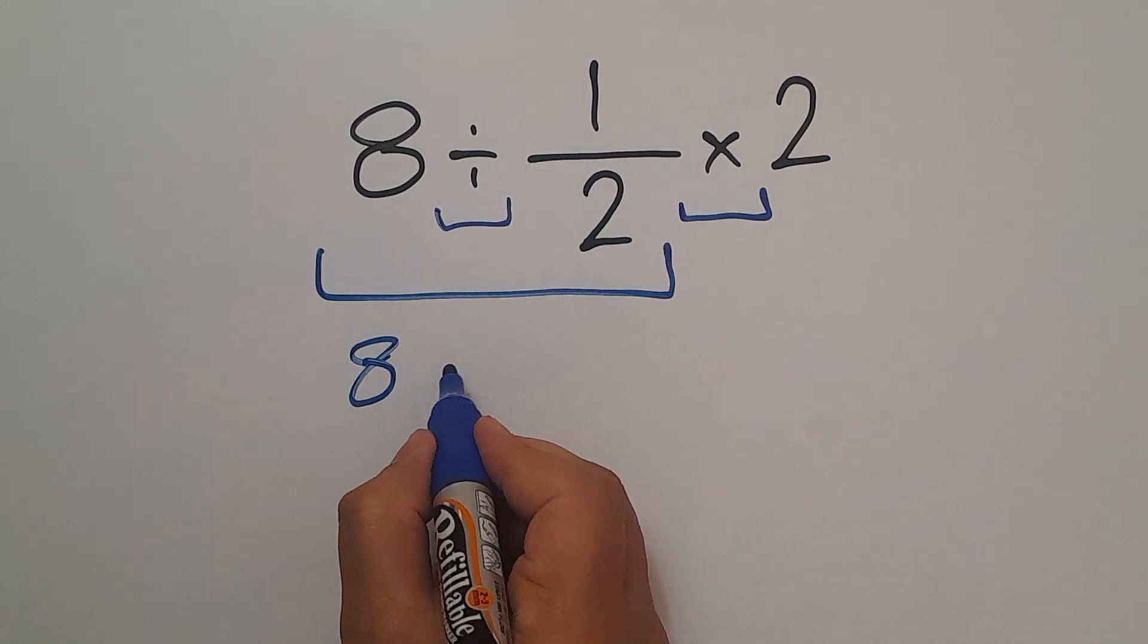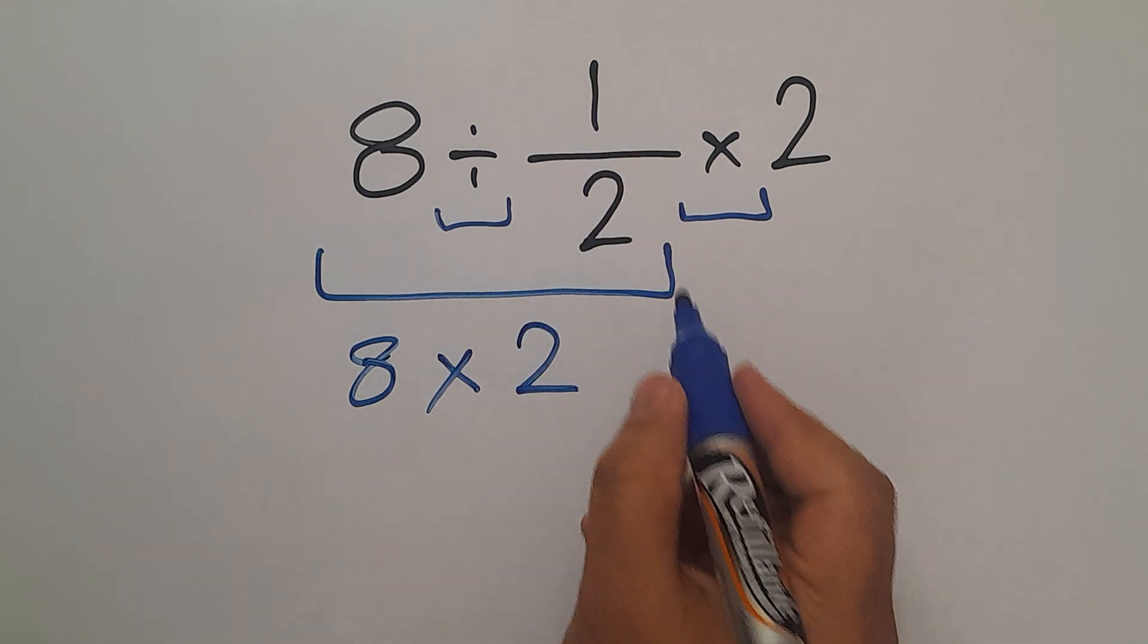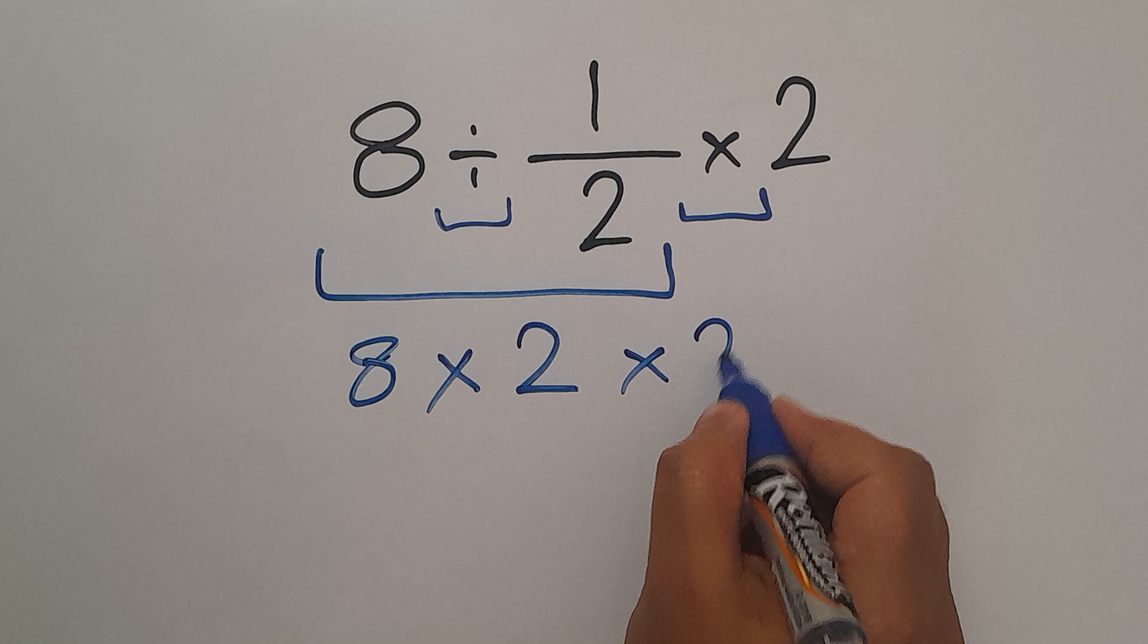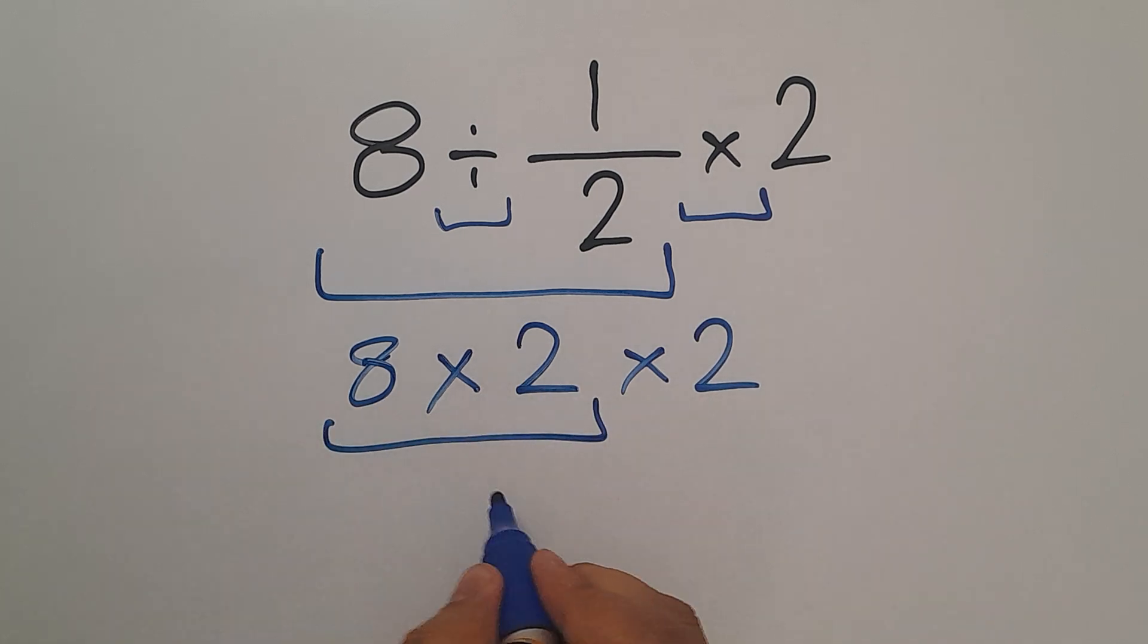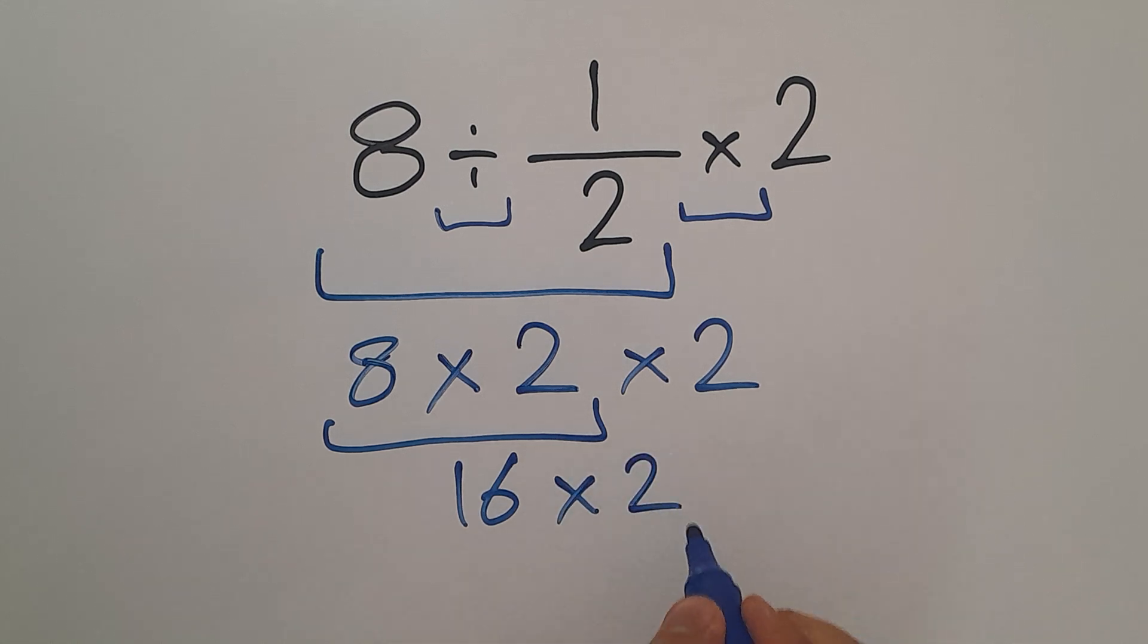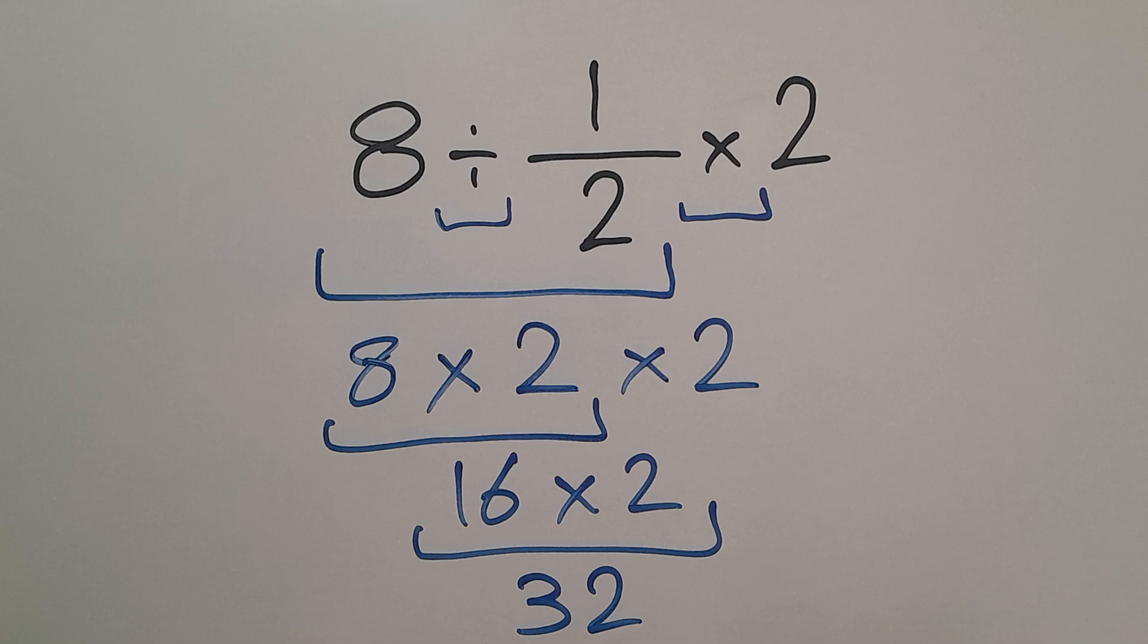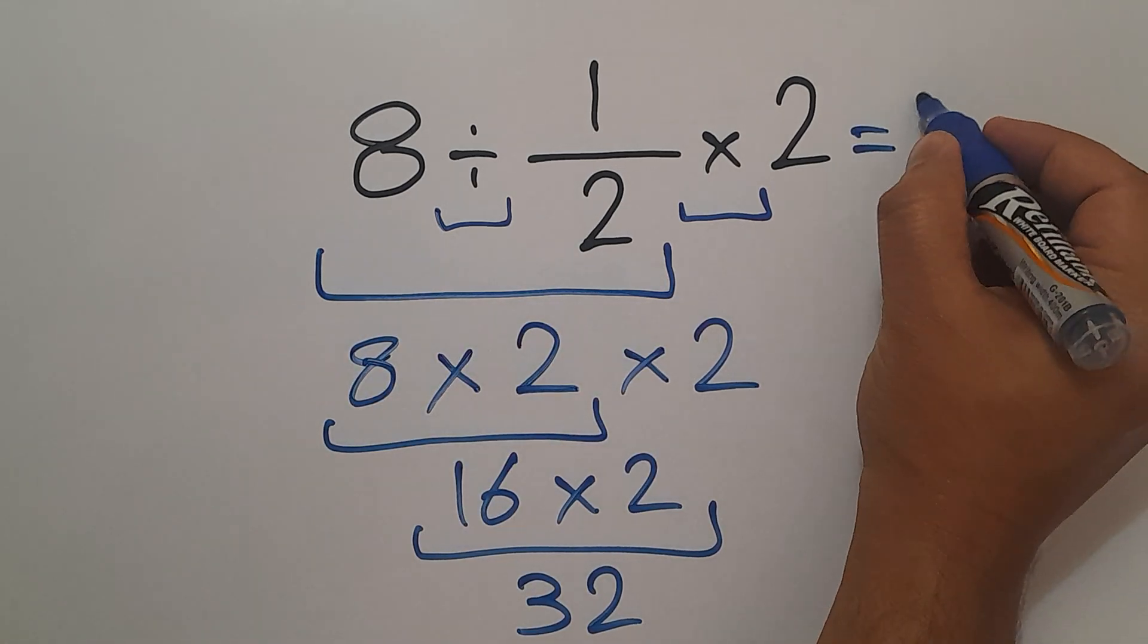8 times 2, and then times 2. 8 times 2 equals 16, and 16 times 2 equals 32. So the final answer to this problem is 32.